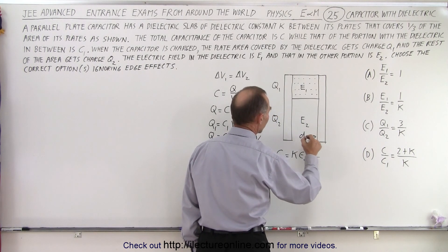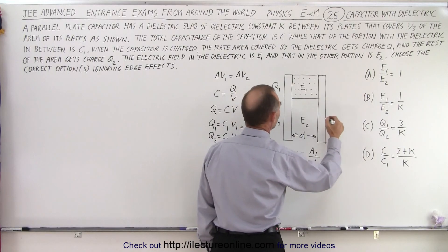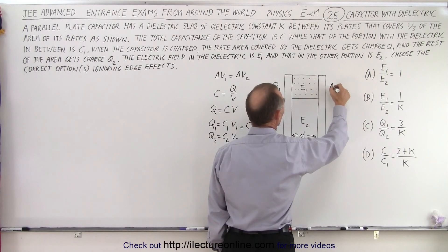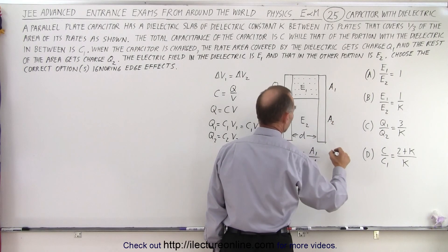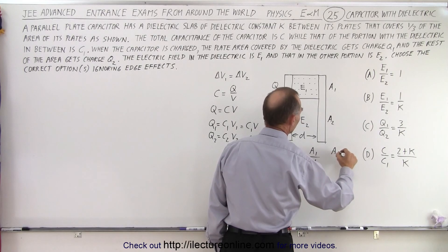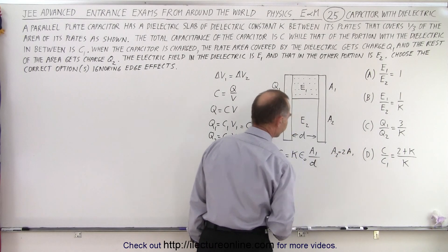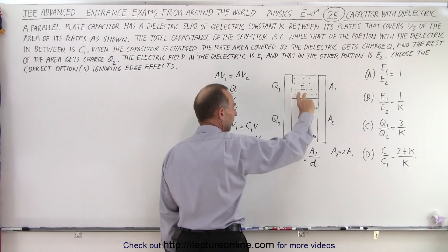And of course distance here is from there to there, and we also know that A1 is over here, A2 is over here, we know that A2 is twice A1 because this is one-third and not two-thirds.